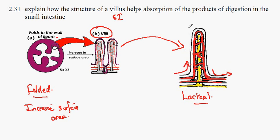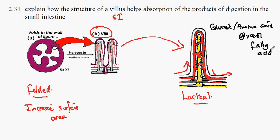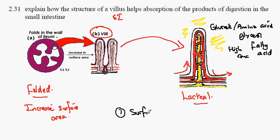The villus is surrounded by glucose molecules, amino acid molecules, glycerol and fatty acids. In the space around the villi, these molecules are in high concentration. The villi increases the surface area for absorption.